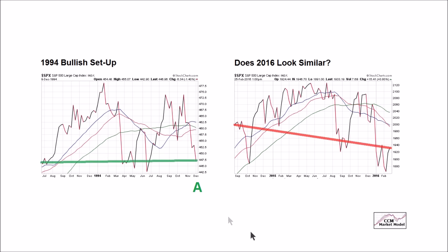These two charts cover a similar time frame — roughly 16 months. Going point to point, price was higher than it was 16 months ago in 1994, which is not the case today — speaking to a weaker trend. Also in 1994, we made a high, a low, a lower high, but never made a lower low because we rallied from that point. In the present day, we have a high, a low, a lower high, and a lower low.